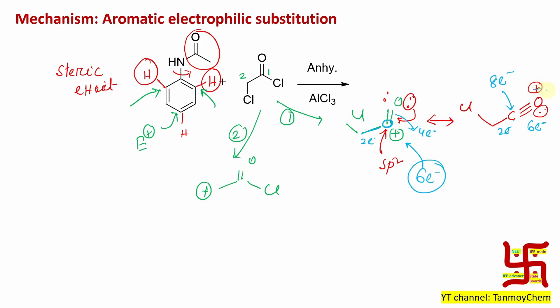In resonance, if an octet filled structure is obtained, that is more stable. Although oxygen is carrying positive charge, oxygen carrying positive charge will create some amount of destabilization. But octet filled will create some amount of extra stabilization. So overall, this canonical form will result in stabilization. This canonical form has a good chance.